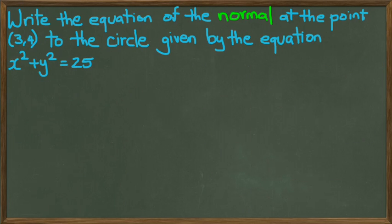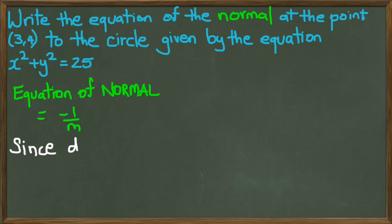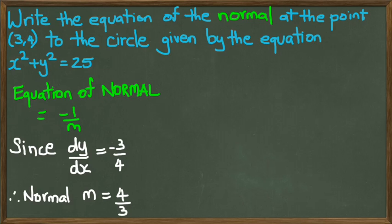So, still working with the same question in the previous slide, but this time we want to find the equation of the normal at the point (3,4) to the same circle. What we know from previous year is that the gradient for a normal to a tangent is negative 1 over m. And since dy/dx was negative 3 over 4, the gradient of the normal should be 4 over 3.